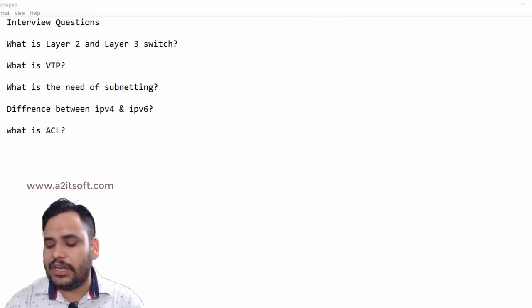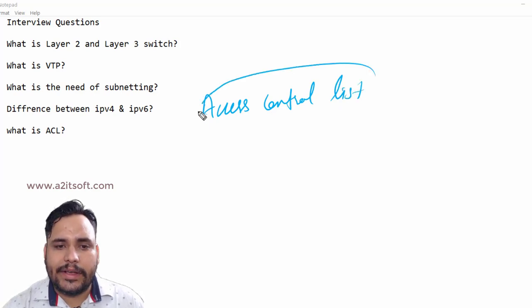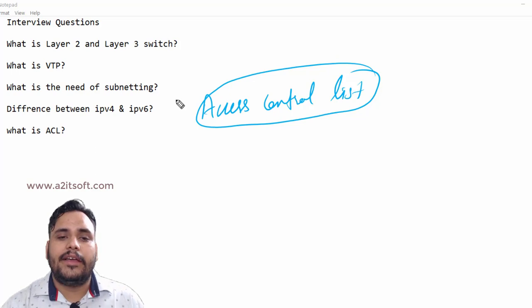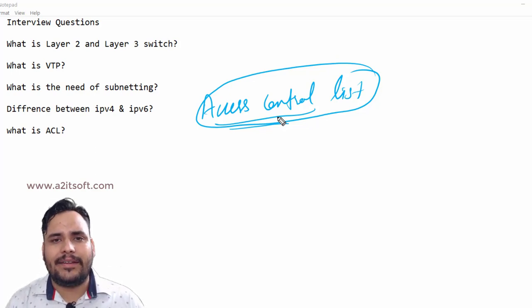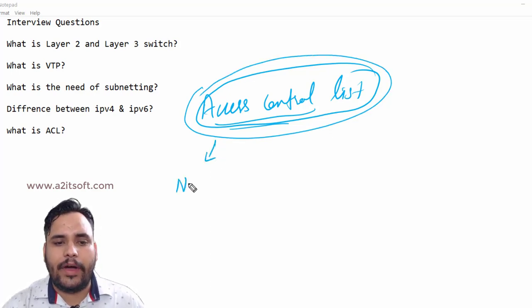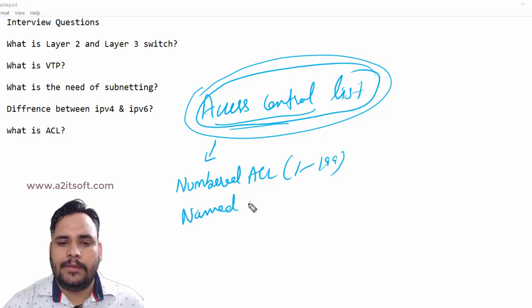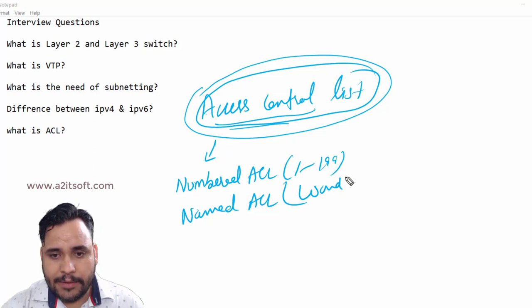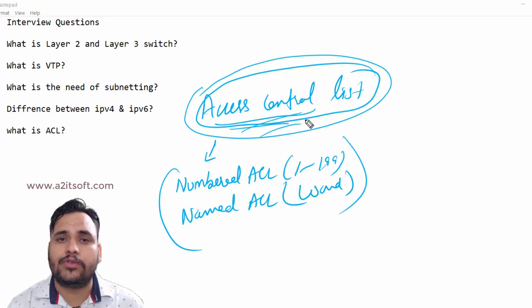Move on to the last question: ACL. ACL stands for Access Control List. Access Control List is part of security. It's a set of commands grouped together for denying or permitting packets, for filtering packets. This range of commands is divided into two parts - you can provide ACL as a numbered ACL (1 to 199) and named ACL, where you can use any word. Access Control List is basically used for denying unauthorized access from outsiders.